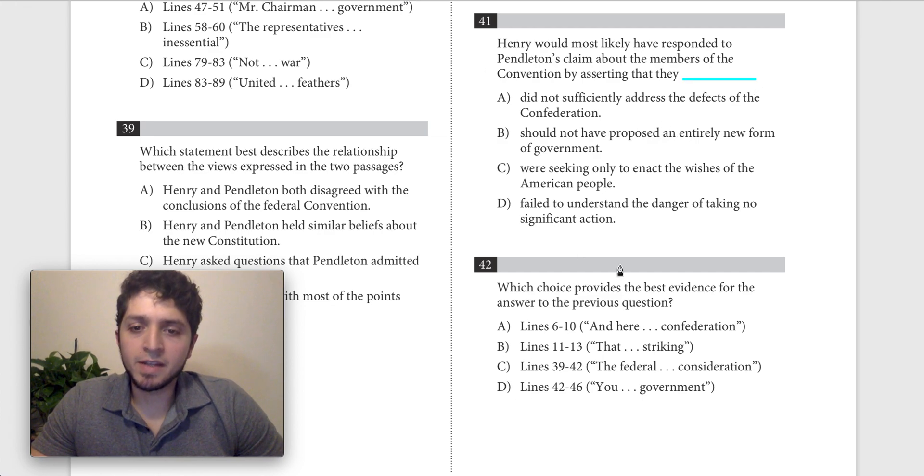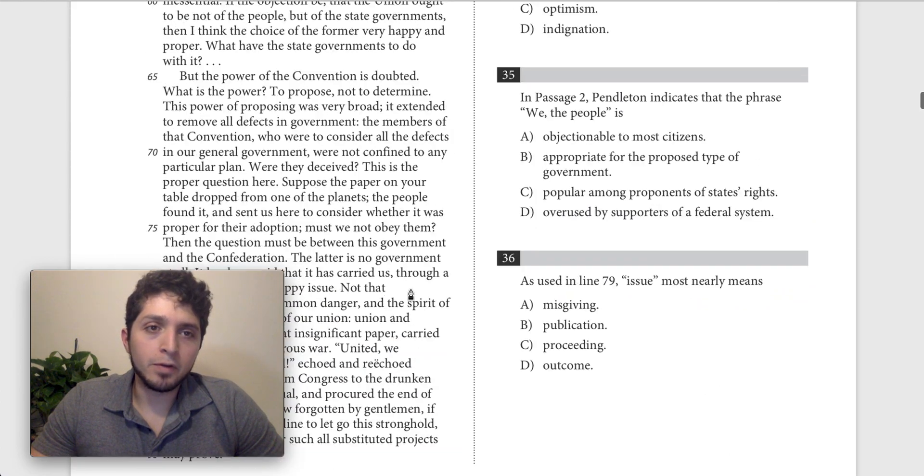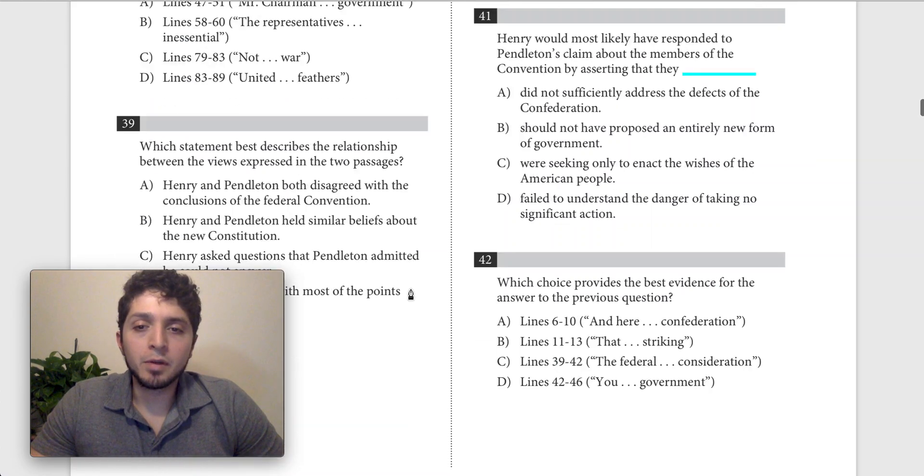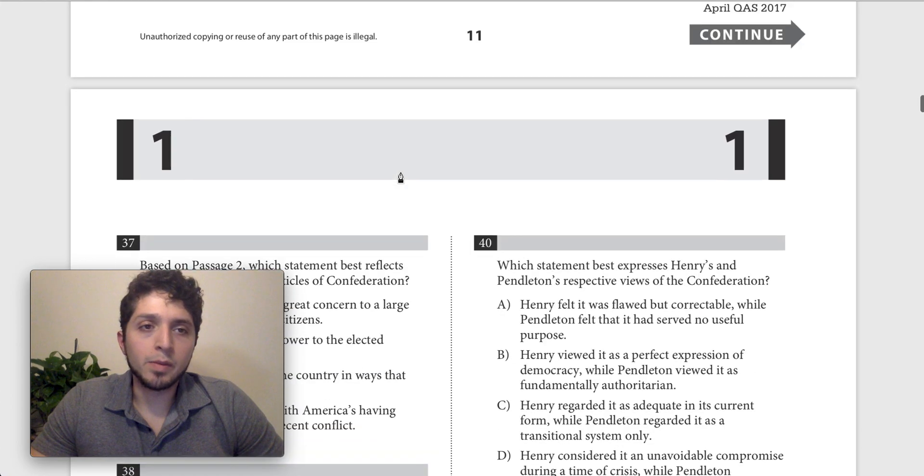Basically we have the text here which are going to give us the evidence for how Henry would likely have responded to Pendleton's claim. So the way that I'm going to solve this is I'm going to first go back to passage 2 and look for a claim that Pendleton makes about the members of the convention.